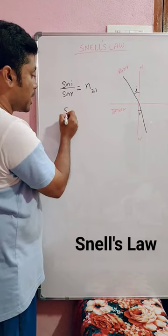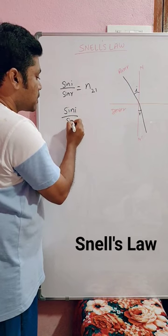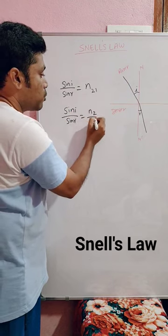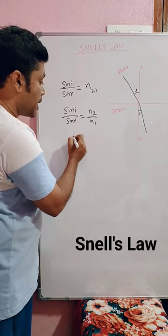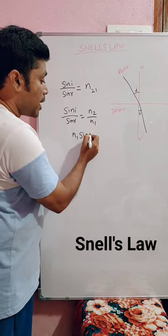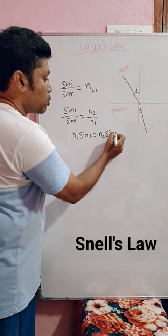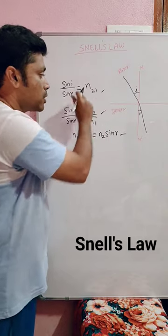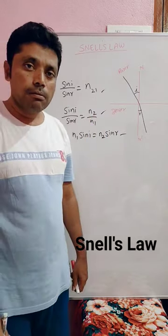It can also be written as sine i by sine r is equal to n2 by n1, or we can also write it as n1 sine i is equal to n2 sine r. So Snell's law means these three formulas indicate Snell's law.